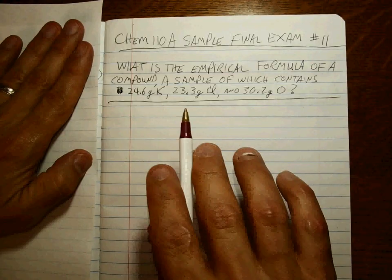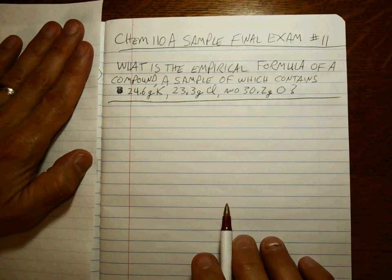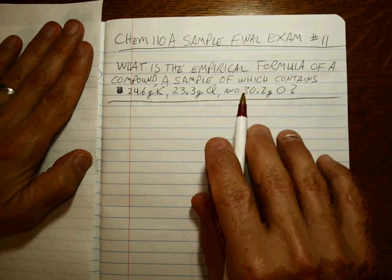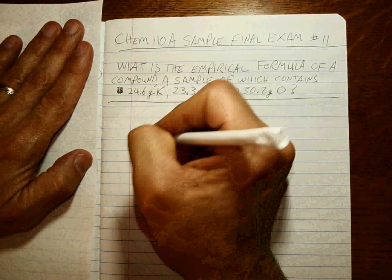As always, it's the same: convert to moles using the periodic table, divided by the smallest number of moles out of the three elements, called normalizing, and then see what ratio you have. See if you have to make any adjustments. If they're all counting numbers, write out the formula.